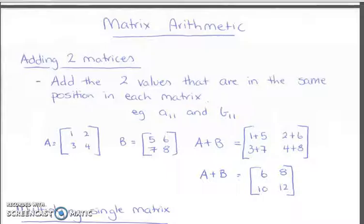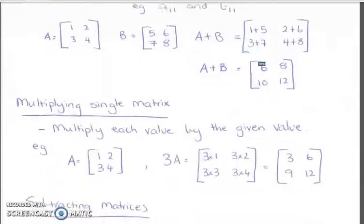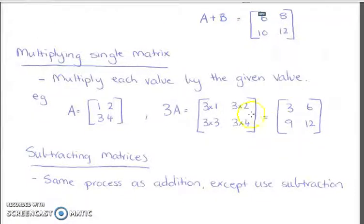Matrix arithmetic. When we're adding matrices, you specifically add the locations together. One and five, two and six. So you add them together and they just join. When we come to multiplying, we can multiply single matrices. So if we had that A matrix, we want to make it three A, you just multiply each of those locations by three. If it was four, multiply each of the locations in the matrix by four.